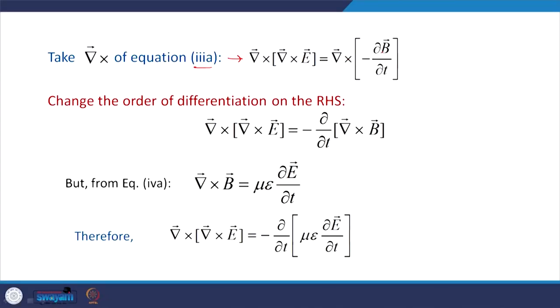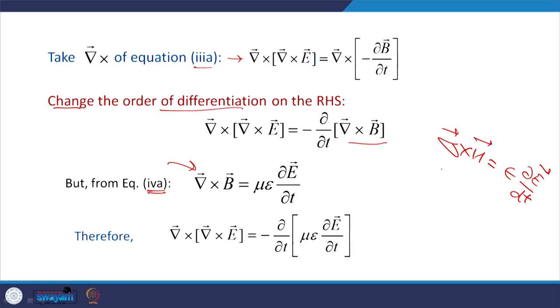We move ahead with these equations and try to solve them to find a wave propagating in the medium or in vacuum. Take the curl of the third equation — curl of E equals curl of minus del B by del t. Change the order of differentiation. From the fourth equation, del cross H equals epsilon del E by del t, so del cross B becomes mu_0 epsilon del E by del t. From there, we end up with a relation for del cross del cross E.